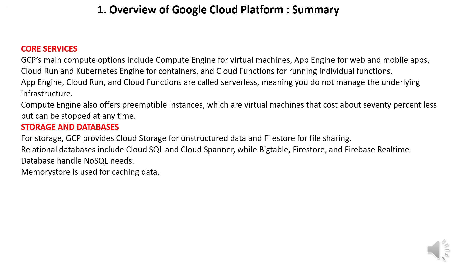To recap: Google Cloud Platform, or GCP, is a suite of online services that help organizations build, host, and deliver applications using Google's global data centers. GCP's main compute options include Compute Engine for virtual machines, App Engine for web and mobile apps, Cloud Run and Kubernetes Engine for containers, and Cloud Functions for running individual functions. App Engine, Cloud Run, and Cloud Functions are serverless, meaning you do not manage the underlying infrastructure.